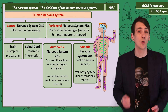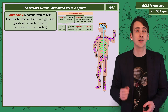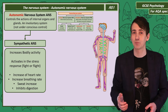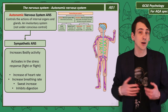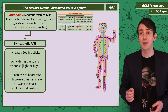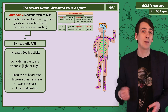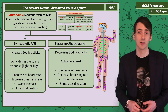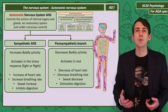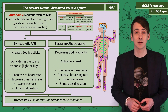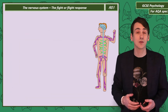We break the ANS down into two opposite branches: sympathetic and parasympathetic. The sympathetic branch activates in a stress response — during fight or flight — and it increases bodily activity needed for immediate survival: increasing heart rate, breathing rate, and sweating, but it will slow processes not needed for immediate survival, like digestion. The opposite, parasympathetic branch is activated as a rest response, decreasing those bodily processes and allowing the body to digest food. Normally there's a balance between these two branches called homeostasis.